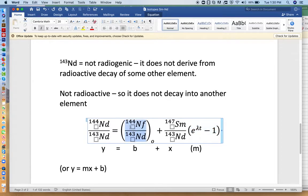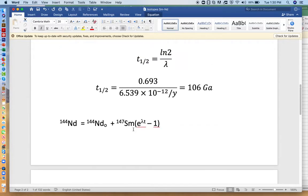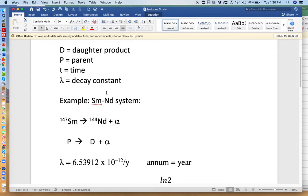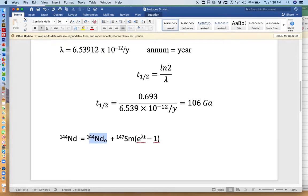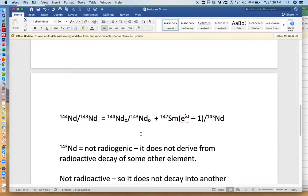And as a bonus, the y-intercept b will give us the initial value. We might think that, oh, how can we ever know the initial value that a system started with over here? Or how would we know the initial ratio over here?